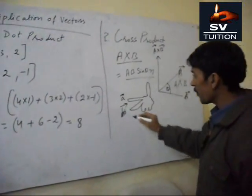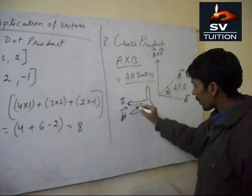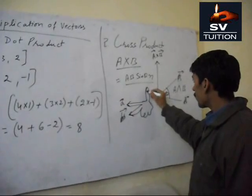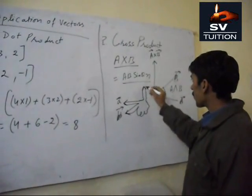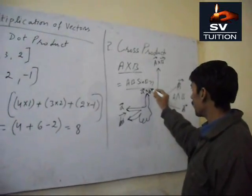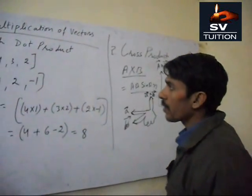If we multiply, this is one direction, this is second direction. If we multiply, it will be just opposite direction. A vector into B vector.